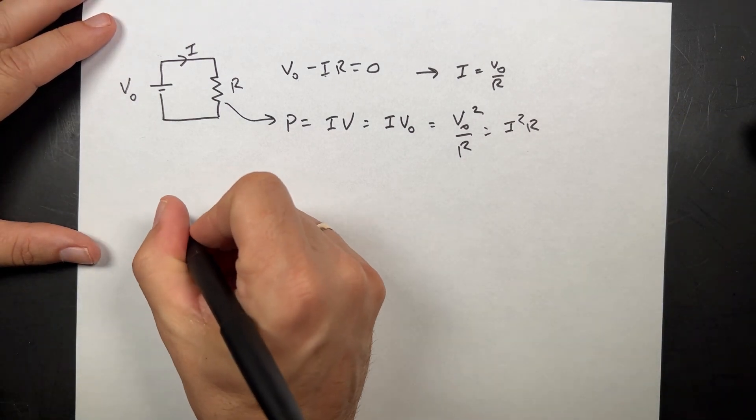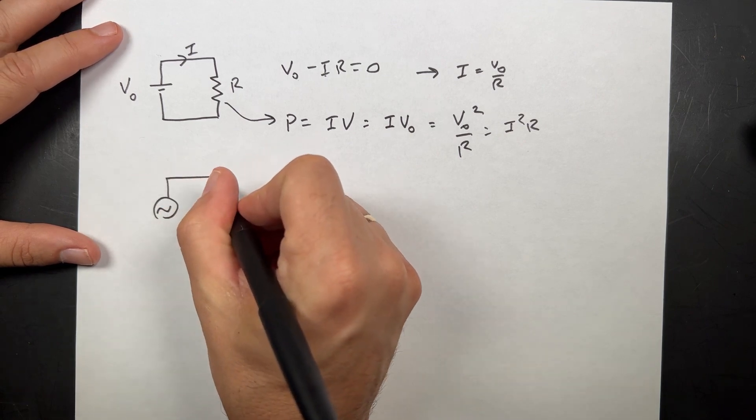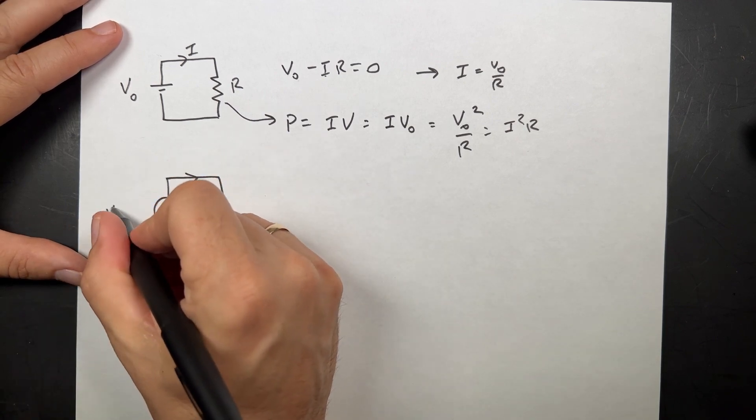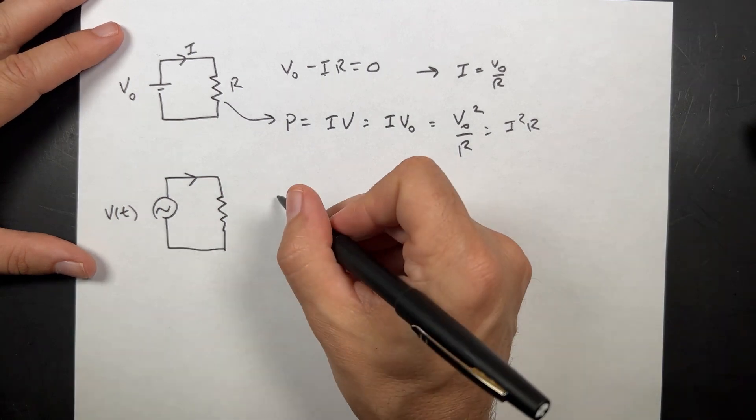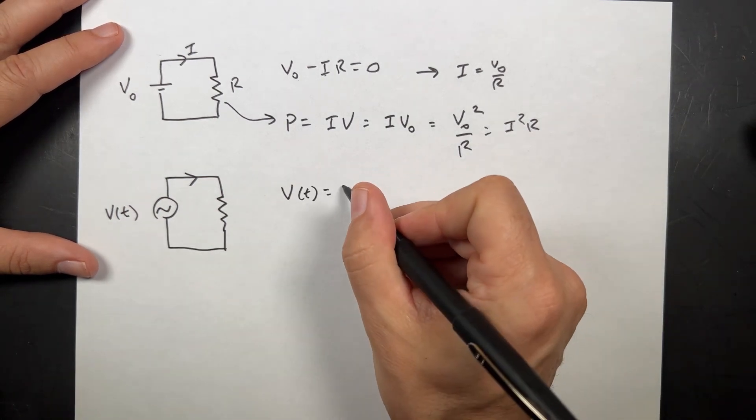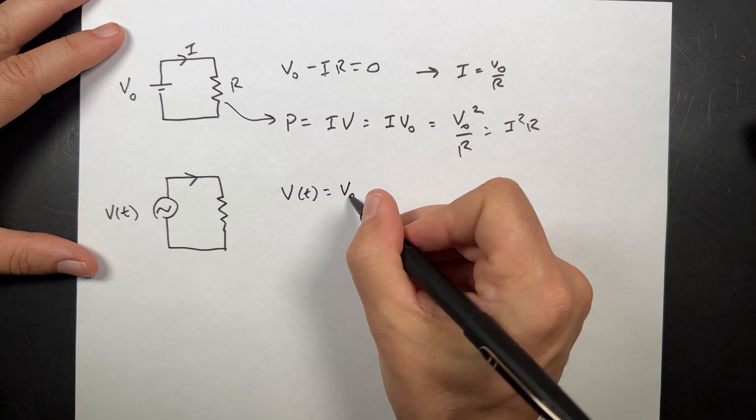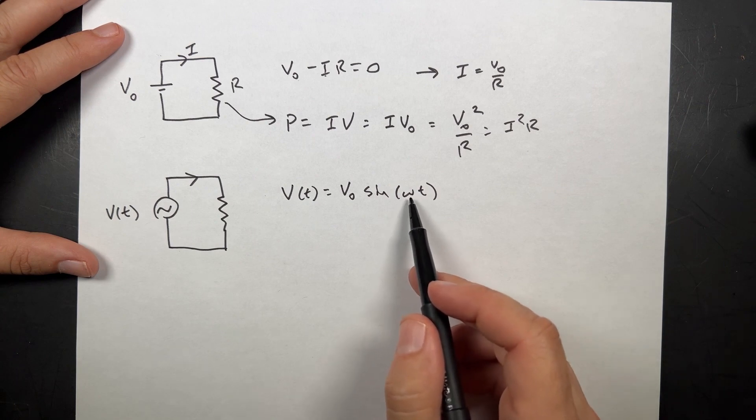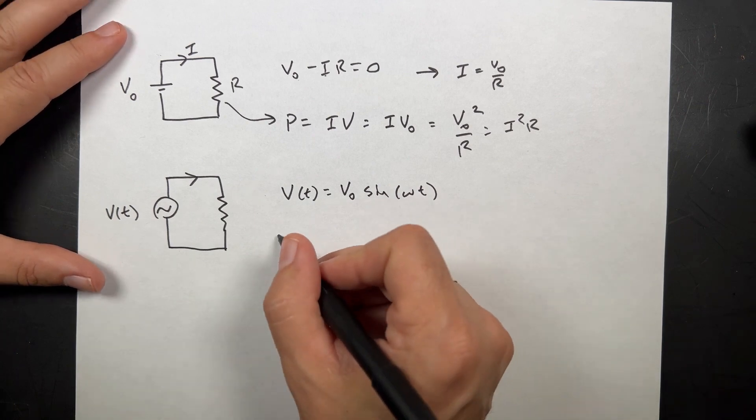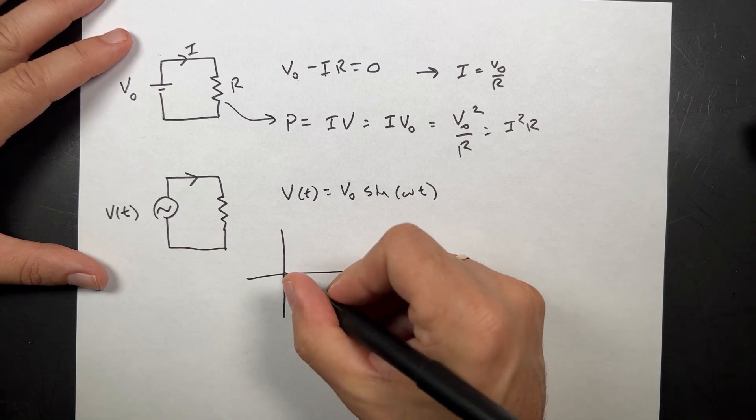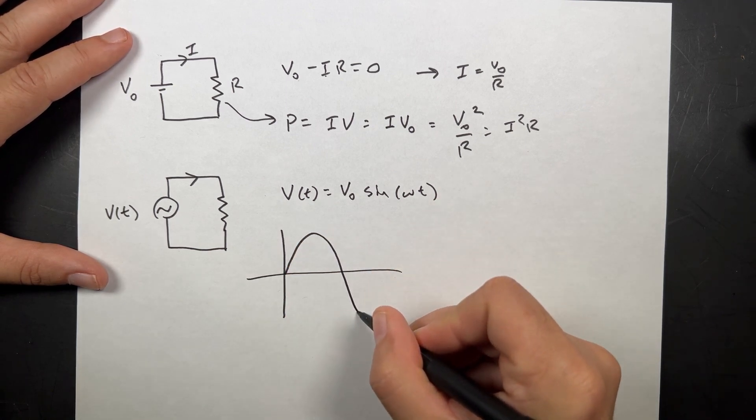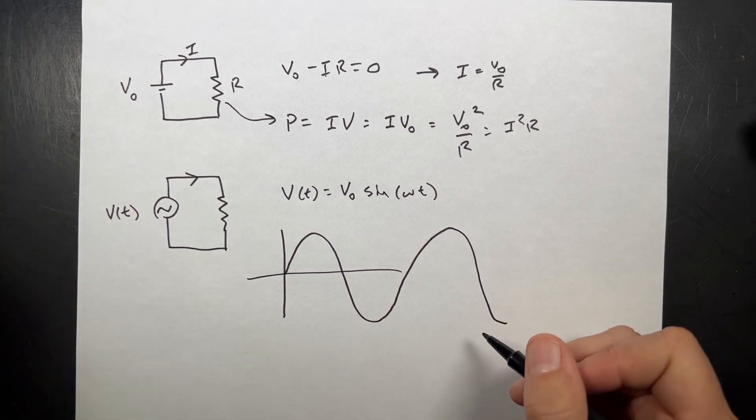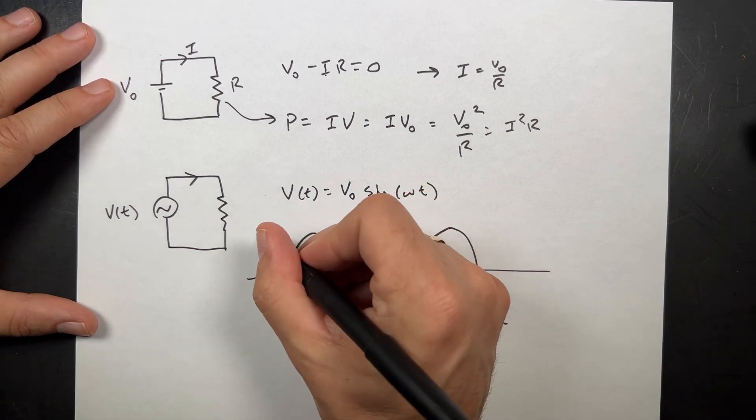Now, what if I replace this with an AC source? And we'll call this V as a function of T. It varies, right? Let's say V as a function of T equals V0 sine omega T. So this changes with time. That's just some angular frequency. So it changes with time. If I plotted that, it would look like this. I'm going to try to draw a nice sine wave like that. So this is V, and this is T.